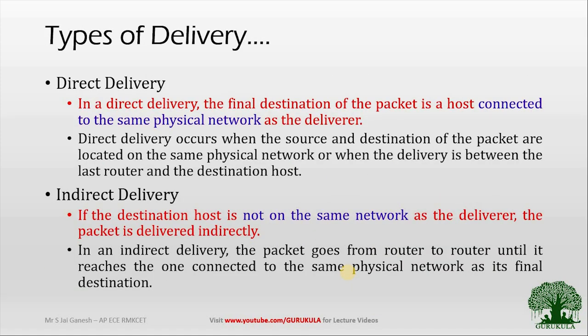Direct delivery takes place when the source and destination fall in the same network. If the source and destination are on the same network, we can implement direct delivery of packets. Indirect delivery takes place when the source and destination fall on different physical networks. In practical situations, most networks do not have direct delivery — it is not possible to have a point-to-point link between all source and destination nodes. So most of the time we will have indirect delivery, and sometimes we will have direct delivery.